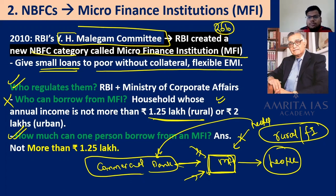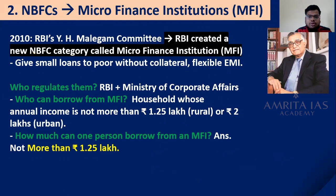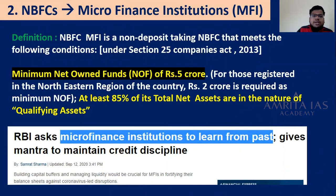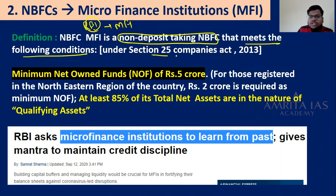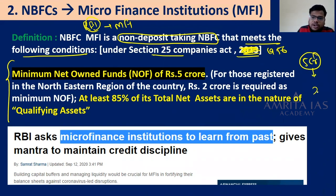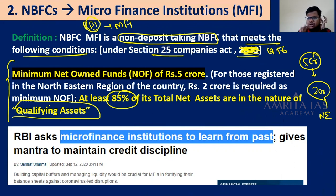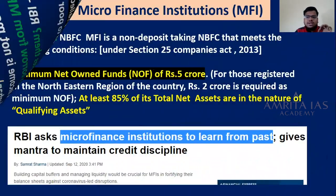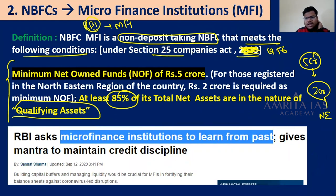One person can borrow only up to Rs. 1.25 lakh rupees from an MFI since it is microfinance. RBI defines NBFC-MFI as a non-deposit-taking NBFC under Section 25 of the Companies Act 1956 with minimum net owned funds of Rs. 5 crore in the rest of India and Rs. 2 crore in the Northeast. 85% of net assets should be qualifying assets — meaning 85% of loans should be to the targeted category of people.